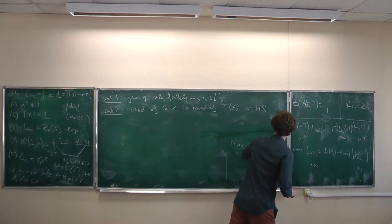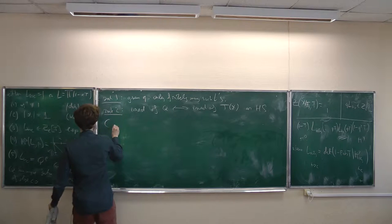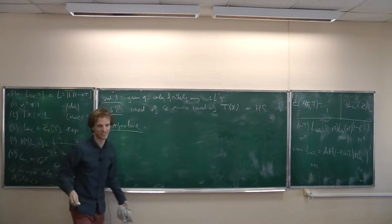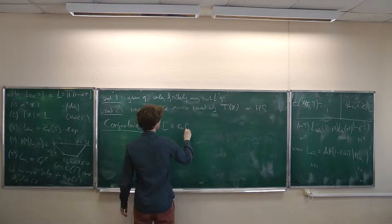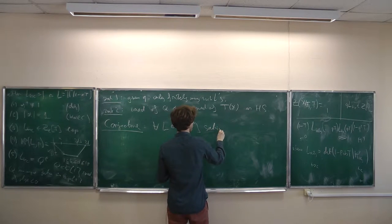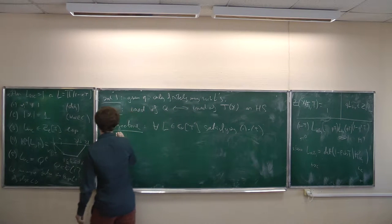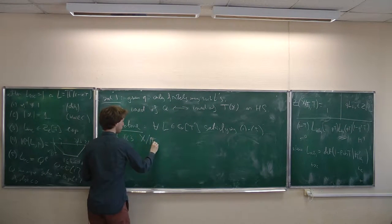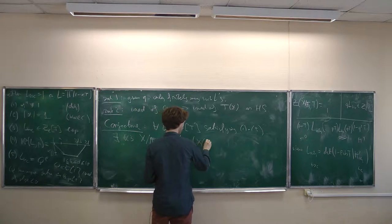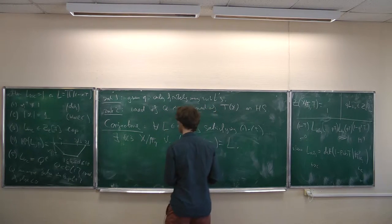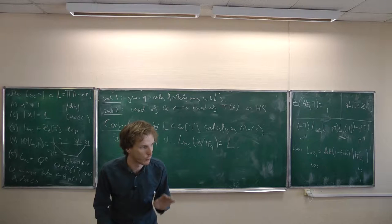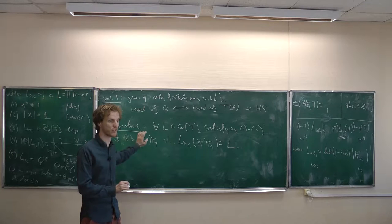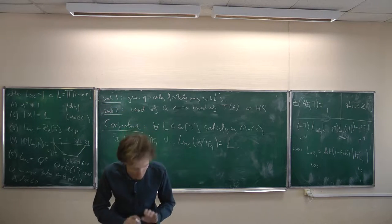Now something new: conjecture. For every rational polynomial L satisfying properties 1 to 5, there exists a K3 surface X over Fq such that the transcendental part of its L-function equals this given L. Regarding the algebraic part — I don't know any way to state a precise conjecture for what combinations of algebraic and transcendental part occur; it's very complicated and I don't dare conjecture anything.